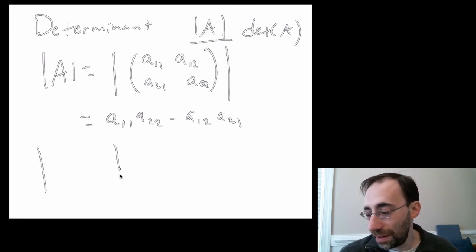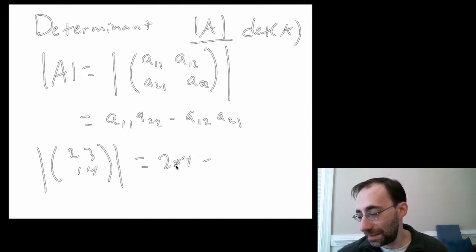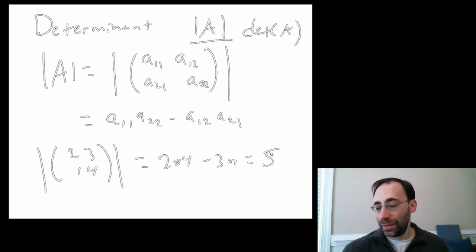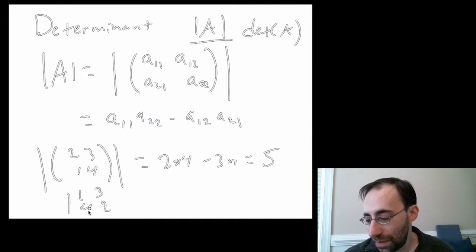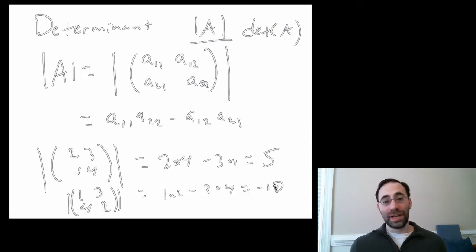So if we put numbers in there, if the matrix is 2, 3, 1, 4, then the determinant is 2 times 4 minus 3 times 1, which equals 8 minus 3, or 5. I could do a different one, where it is 1, 2, 3, 4, and there would be 1 times 2 minus 3 times 4, or negative 10. The determinant can be positive or negative.